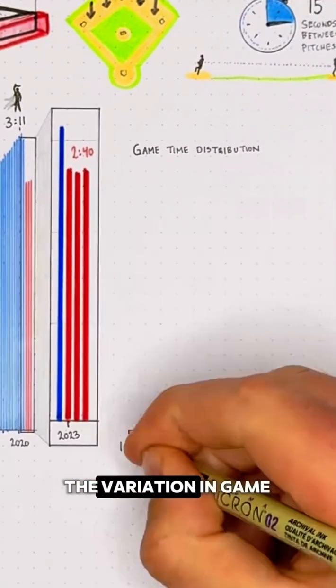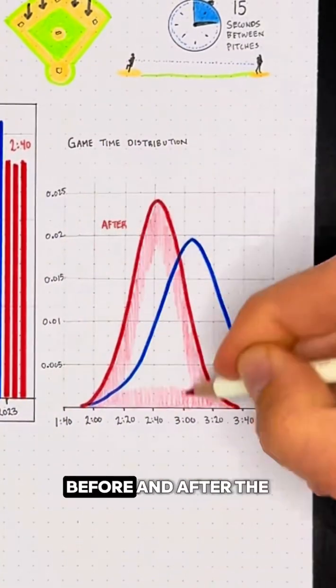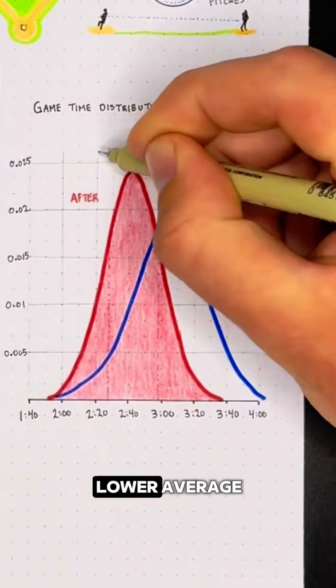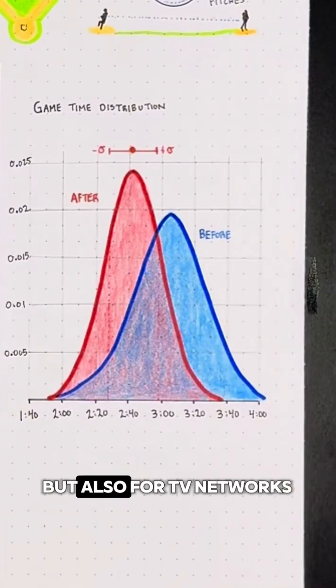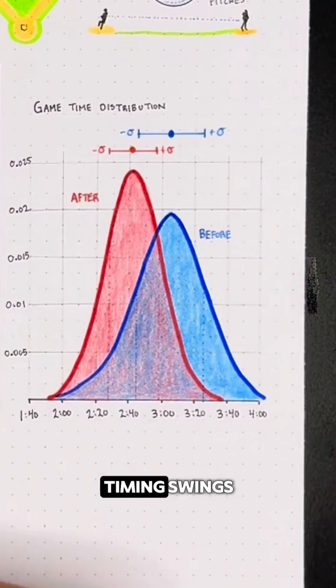On top of that, the variation in game length has decreased significantly, and if we look at the distribution of MLB game times before and after the rule changes, you can see that our red curve on the left not only has a lower average, but is also more tightly distributed, which isn't just better for fans planning their day, but also for TV networks that have to schedule around games and don't want unpredictable timing swings.